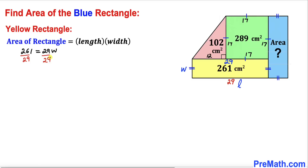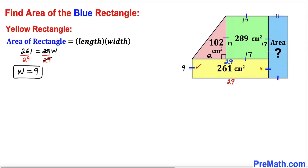Dividing both sides by 29, the 29s cancel, and our width w turns out to be 9 centimeters. Therefore this width is 9. We can see that this side length of the yellow rectangle equals the corresponding side length on the adjacent shape, so those side lengths are 9 centimeters as well.